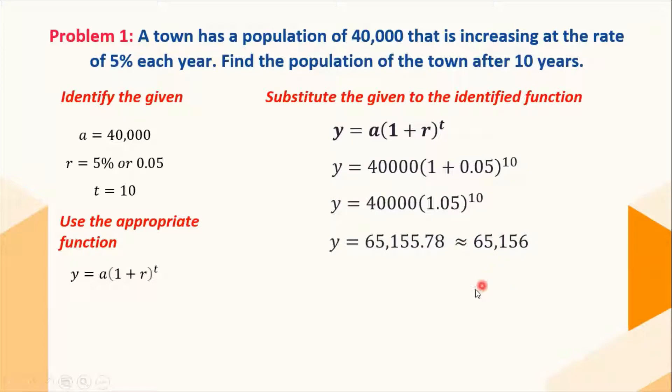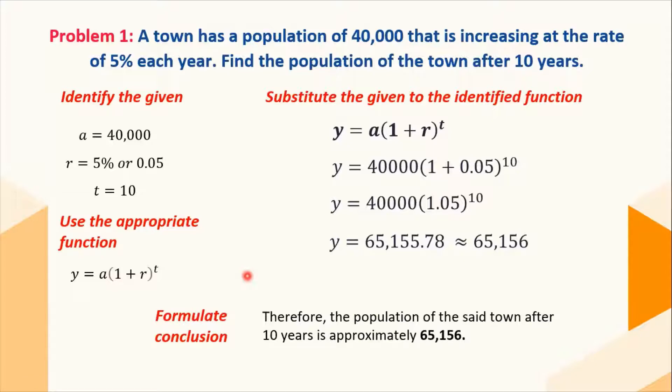You simplify that. And our final answer, we estimate it to the nearest 100 people, which is 65,156. We can now formulate a conclusion that the population of the said town after 10 years is approximately 65,156.